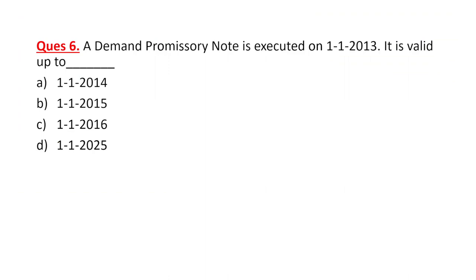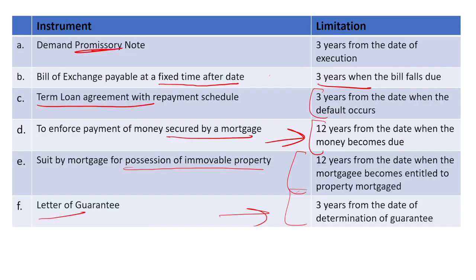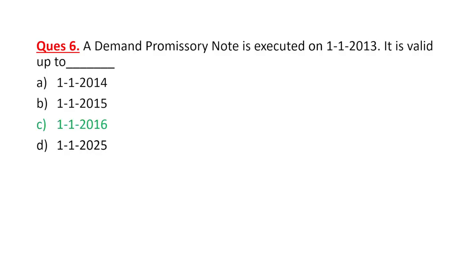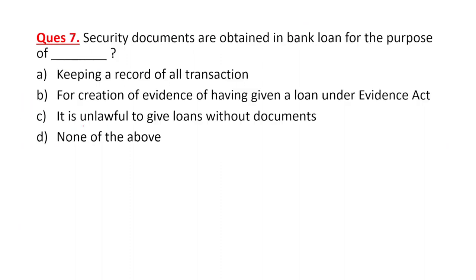A demand promissory note is executed on 1st January 2013. Since the limitation period for a demand promissory note is 3 years, till 1st January 2016 you can file the claim — after that you cannot.